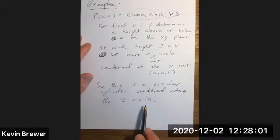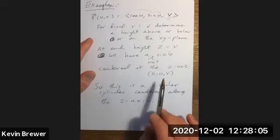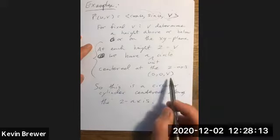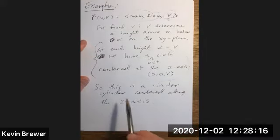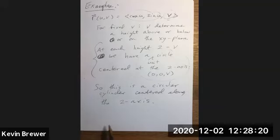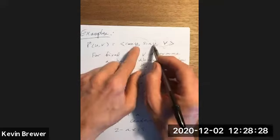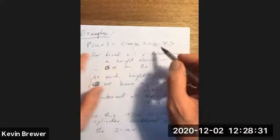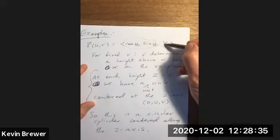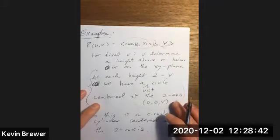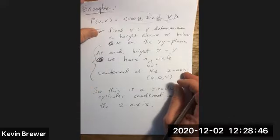So what we have here is a circular cylinder centered along the z-axis. I think I've probably already said enough for you to figure out what the grid lines are. These unit circles are grid lines for fixed v. What are the grid lines for fixed u? If u is an angle, u determines an angle in the xy plane, you then let v vary and you get these vertical lines that run parallel to the z-axis.